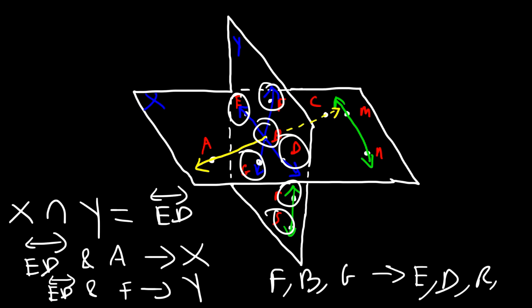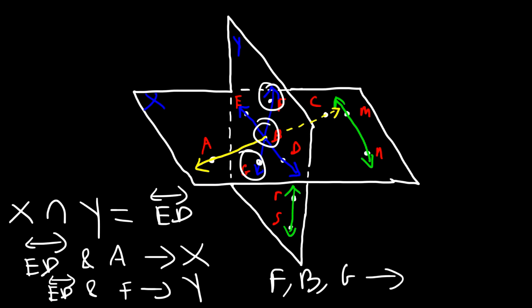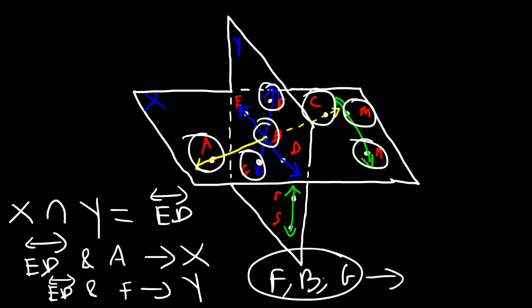Which points are non-coplanar with F, B, and G? We need points found in plane X but not in plane Y. A, C, M, and N are non-coplanar with F, B, and G. These three points identify plane Y, and A, C, M, and N are not in plane Y, so they are non-coplanar with F, B, and G.